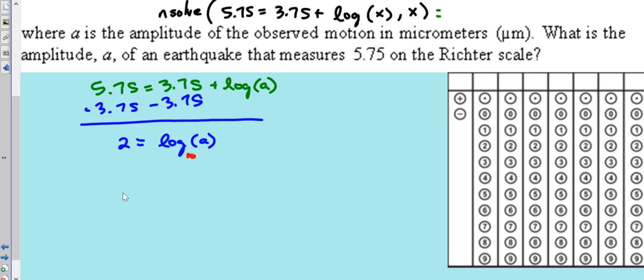Now, exponentially, you know the base. So the base is 10. And now these two values flip-flop. So 10 to the power of 2 equals A. That means that A must equal 100, and that would be my answer here.